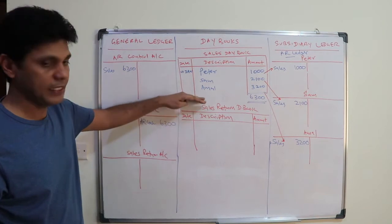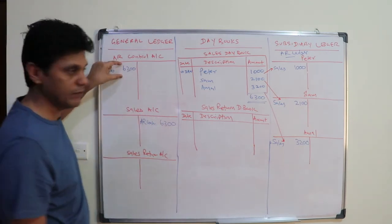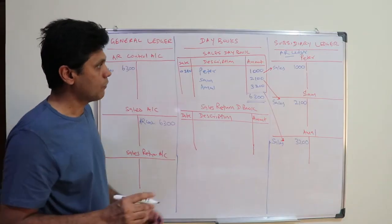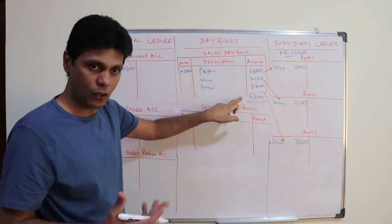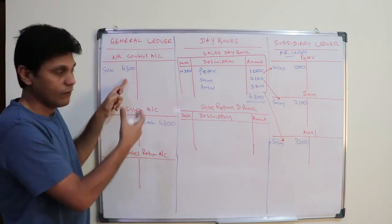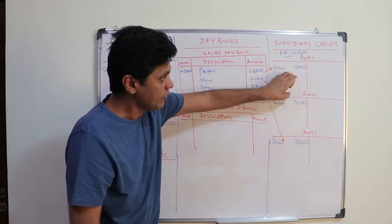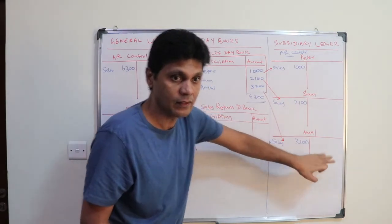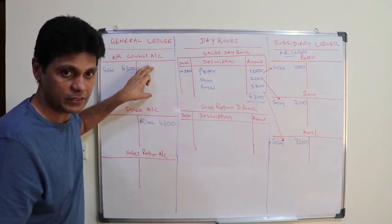At any given point, the total of the accounts receivable control account balance should tally with the sum of individual customer balances. Whatever is debited in the individual accounts should appear on the debit side of the accounts receivable control account, and whatever is credited should appear on the credit side — in total, not transaction by transaction.